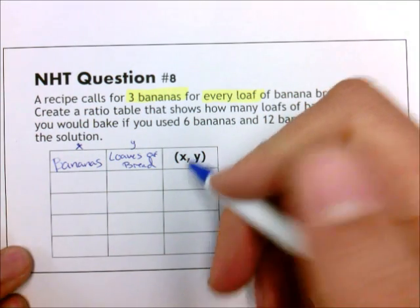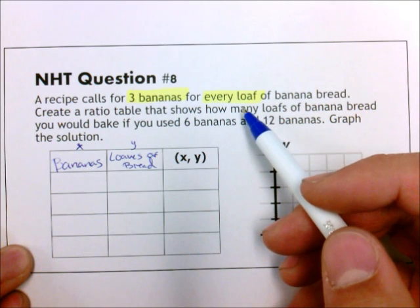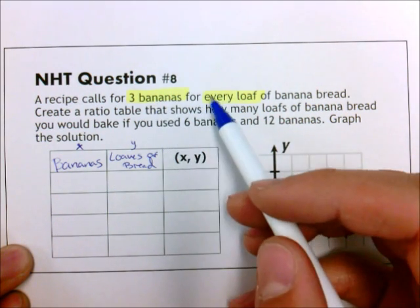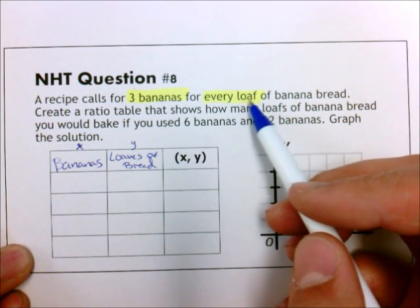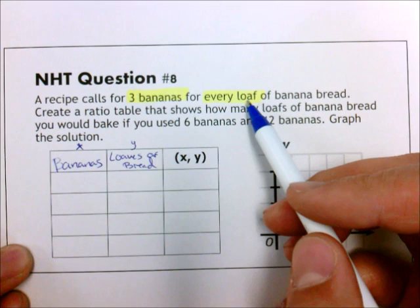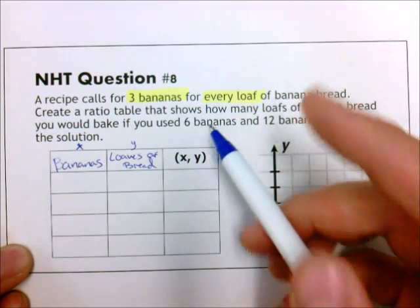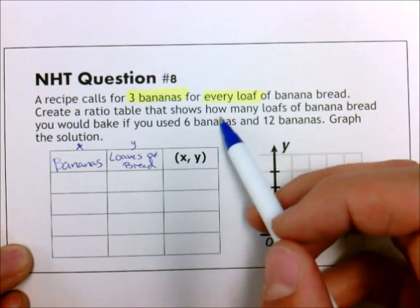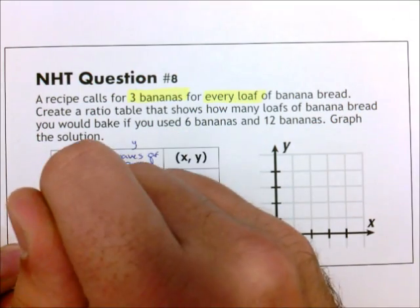A recipe calls for 3 bananas for every loaf. That is our starting ratio - that's what we will start with. Loaf is a singular word - I like to use a little bit of language arts terms with my students. Loaf, we are talking about one thing versus loaves where we're talking about multiple. So since it's the word loaf, that is a 1, and we use 3 bananas.